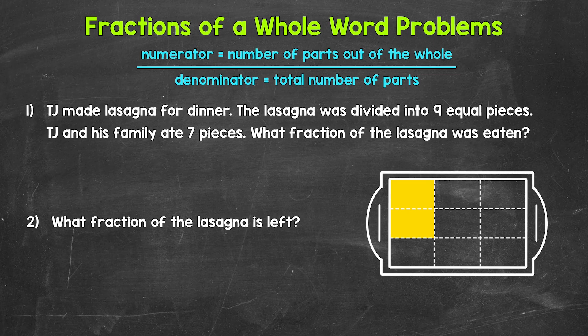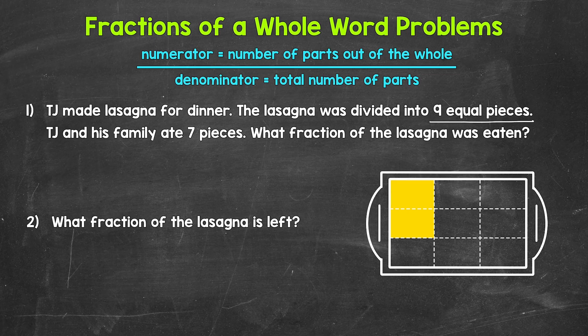We will be writing out fractions here, so we will need to determine the numerator and denominator based on the situation. Let's jump into number one, where we have TJ made lasagna for dinner. The lasagna was divided into nine equal pieces. TJ and his family ate seven pieces. What fraction of the lasagna was eaten? Let's start with the denominator — the total number of parts. The total number of pieces the lasagna was divided into is nine. So nine is our denominator.